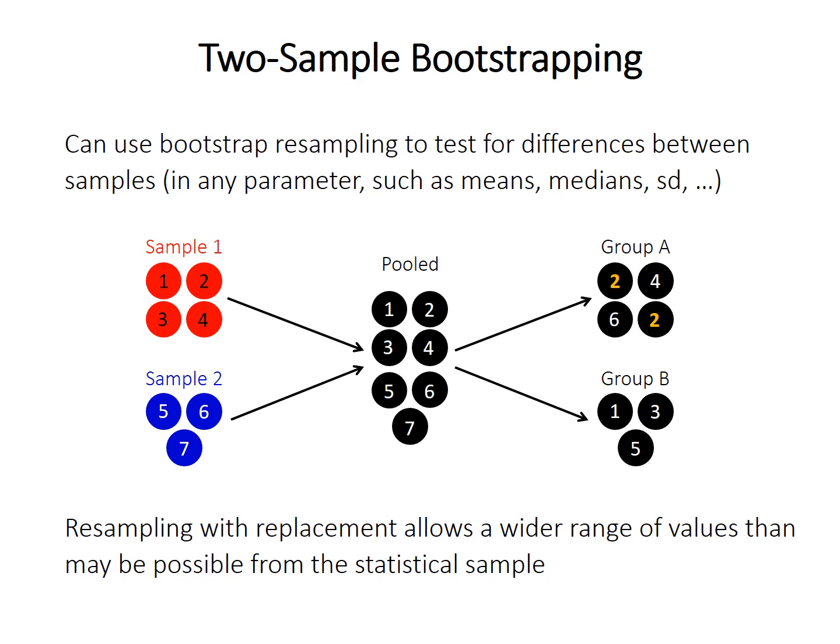It's also possible to do two-sample bootstrapping. In this case, we still pool the samples, right? We're simulating what would happen if the null hypothesis is true, but then when we sample that pool, we still retain the structure. So we still have four observations in group one and three in group two. That's still all the same, but what we're doing now is resampling with replacement. So this is actually much more common probably than true randomization.